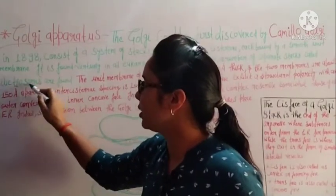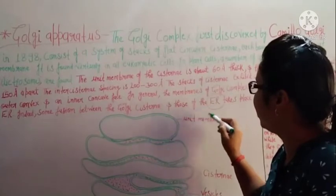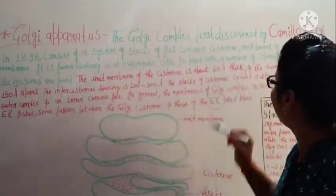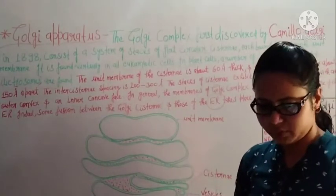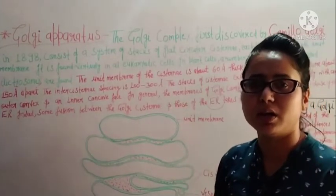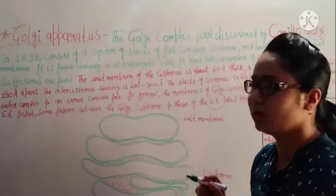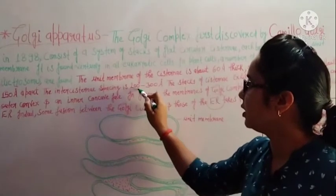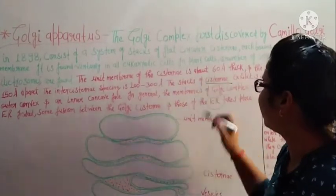Dictyosomes are also asked about in short notes in exams. The unit membrane of the cisternae is about 60 Angstroms thick, and the two membranes together are about 150 Angstroms apart. The inter-cisternae spacing is 200 to 300 Angstroms.